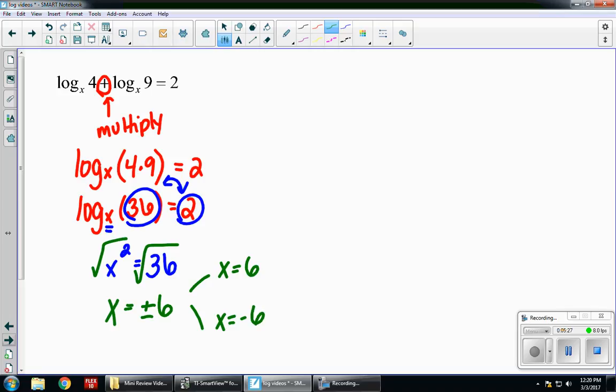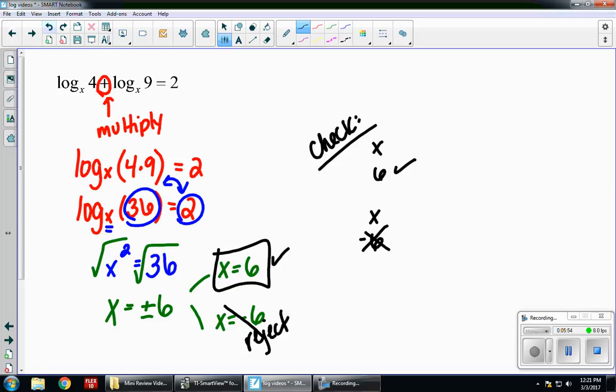And remember, once again, with log equations, you always want to check. So, I'm plugging into x. Well, if x is 6, that works because it's a positive. If I plug in negative 6, that doesn't work. You can't have a base be a negative value. Oops. Look at that. I hit the wrong box. The wrong answer. Here's my answer. This one rejects. And that's how you solve a log equation.